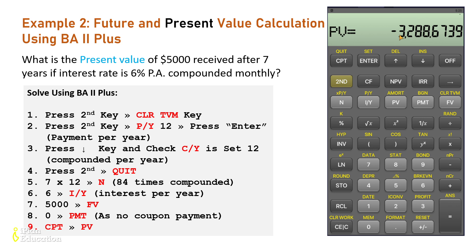This is how we calculate present value and future value using the BA II Plus. In the next example, we will learn about what happens if you are receiving a coupon payment every month — as in the case of a bond, where you receive monthly, semi-annual, or quarterly coupon payments — and how to calculate the bond value. We will learn that in the next video. Till then, keep practicing. Take care, bye.